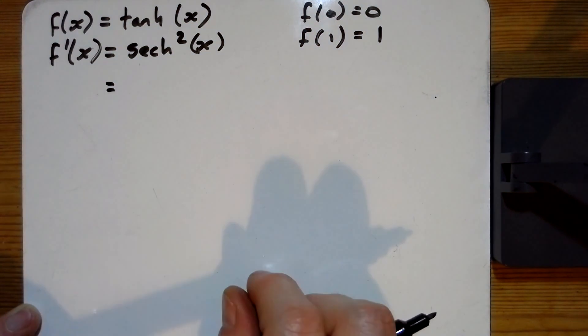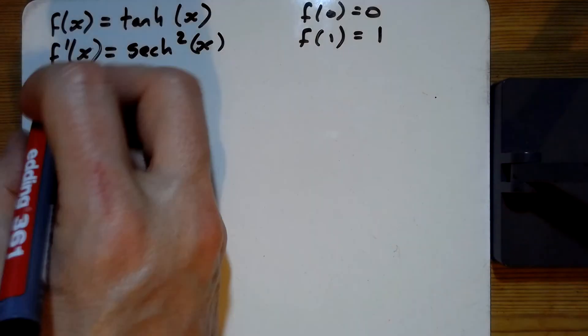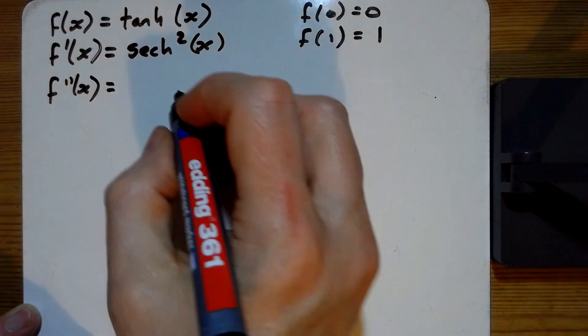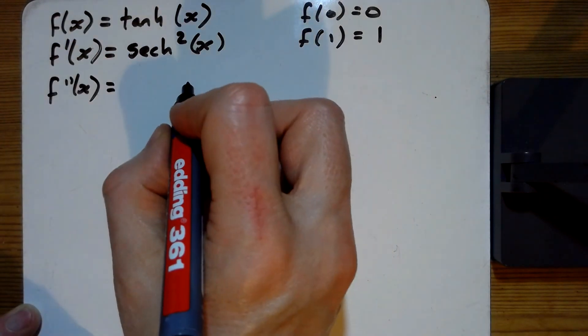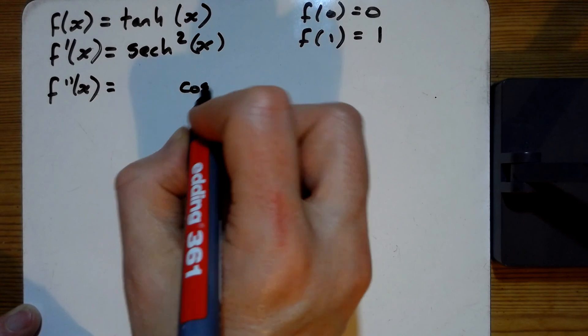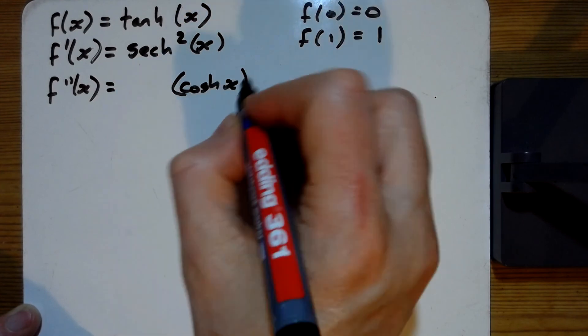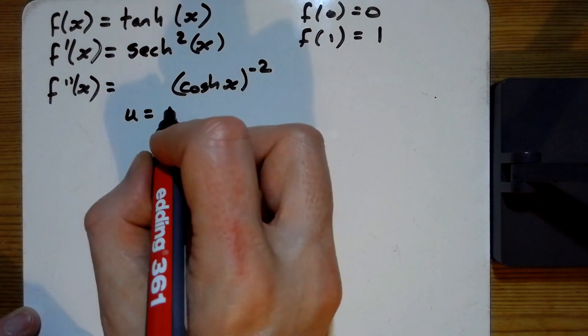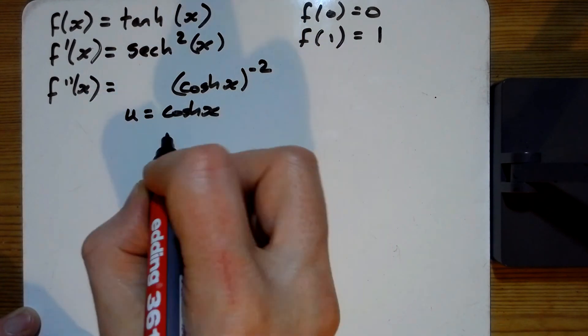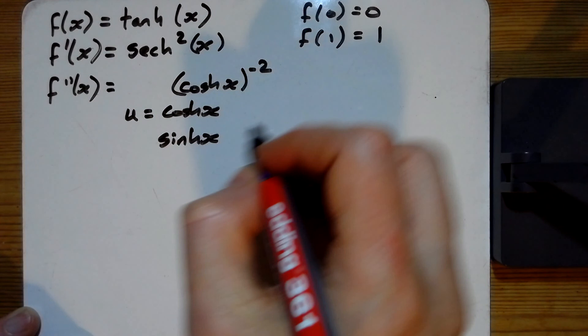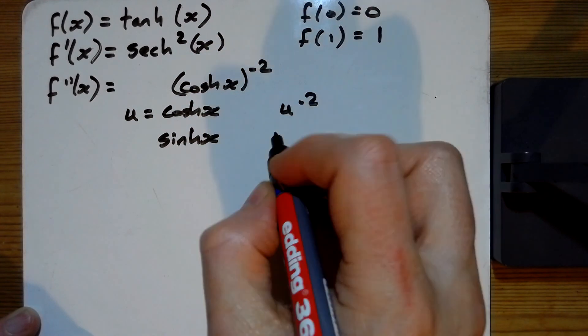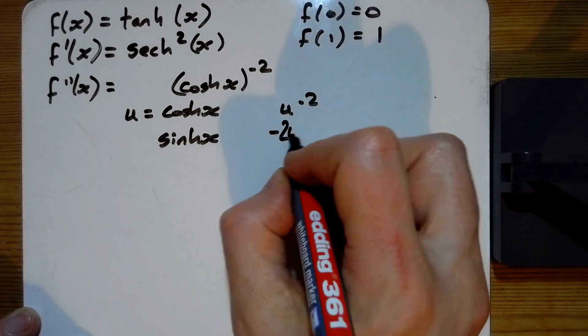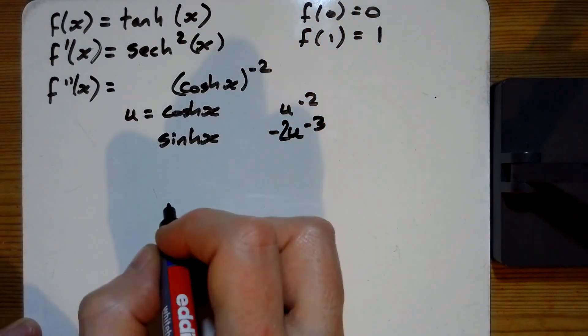Right, now what's that going to differentiate to give? I'm going to do that. I think I'm going to do that as a, I'm going to do a cosh x to the power of minus 2. I think that'll be easier. So I've got cosh x goes to sinh x, u to the power of minus 2 goes to minus 2, u to the power of minus 3.